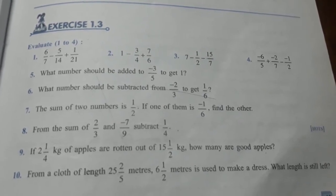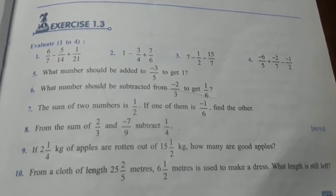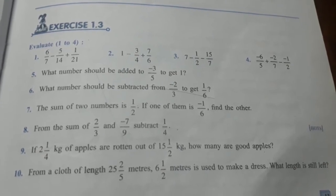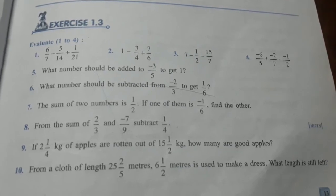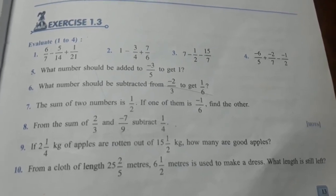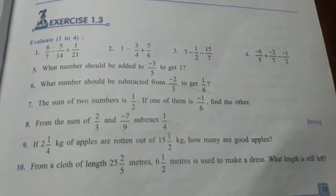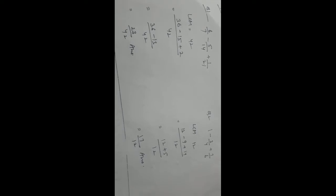These are the questions of rational numbers class 8 Goyal Buddha's Prakashan. In this video, I am going to solve exercise 1.3 question number 1 to 6. So let's check it out how to solve all these questions. In question number 1 to 4, rational numbers are to be subtracted and added altogether.